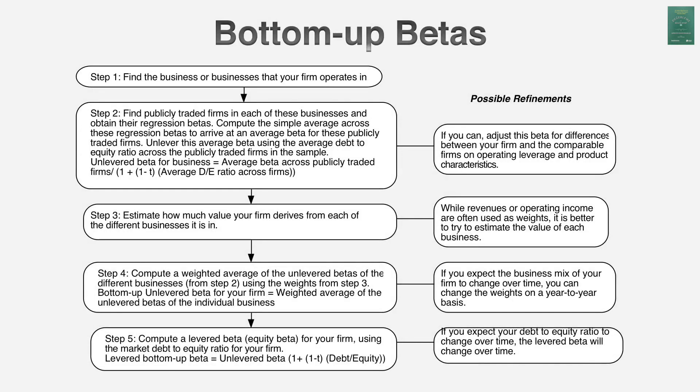So to value a company, rather than looking at a regression, I start with the fundamentals: what does this company do, what kind of beta would I expect given what it does, what does its cost structure look like, and how much has it borrowed? Answering those questions gives me a much better insight into what the beta should be than looking at a regression and taking the slope of the line.